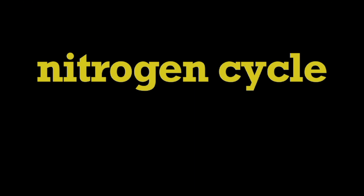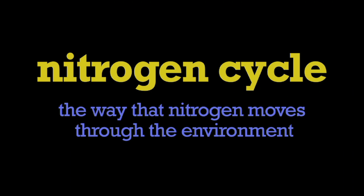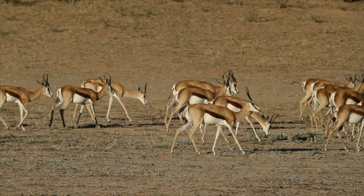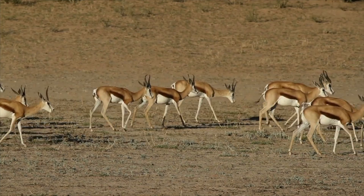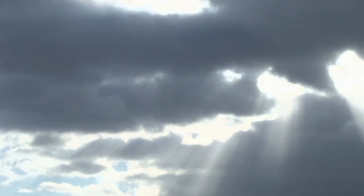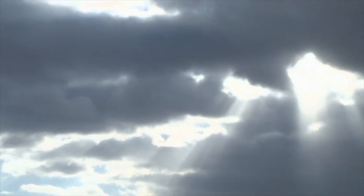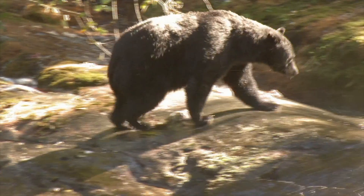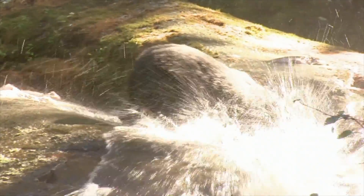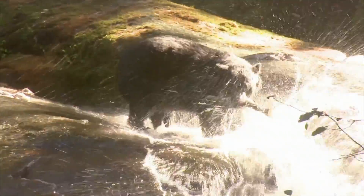In this program, we're going to learn about the nitrogen cycle. The nitrogen cycle refers to the way that nitrogen moves through the environment. All organisms need nitrogen to live and grow. About 79% of the Earth's atmosphere is made up of nitrogen. However, nitrogen in a gaseous state is almost entirely unusable to living organisms.